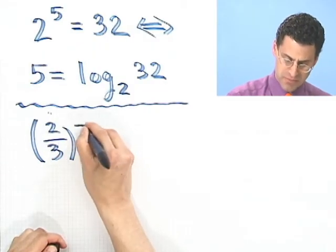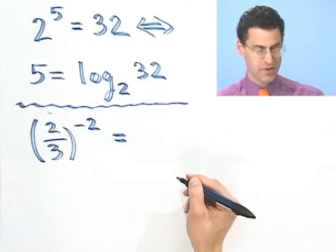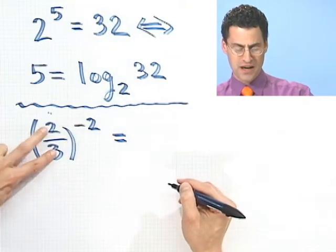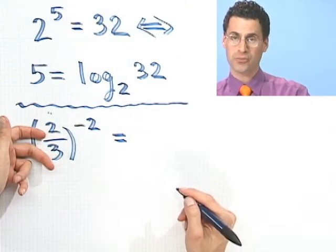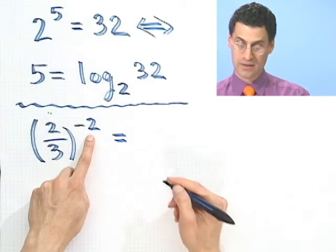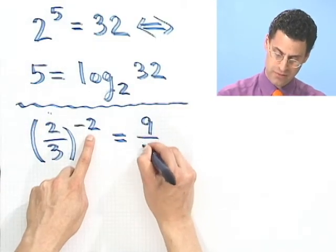2 thirds to the minus 2, what does that equal? Let's just do that in our heads. The negative sign will flip this, so I get 3 halves, but then I square it, so I get 9 fourths. So this equals 9 fourths.